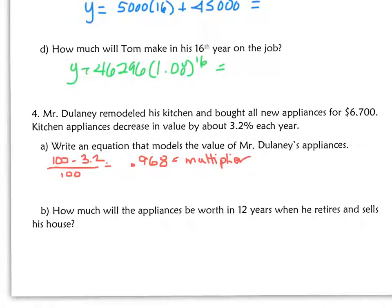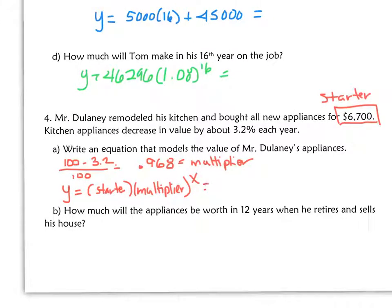Our starter, they gave it to us right here. $6,700. And again, y equals the starter times the multiplier to the power of x. That's the form of an exponential equation. So in Mr. Delaney's case, it would be y equals 6,700 times .968 to the power of x. There it is.